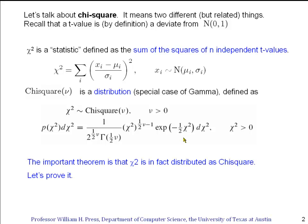The reason we use the name chi-squared for both of these concepts is because they are related. The theorem is that χ², the statistic, is in fact distributed as chi-square, the probability distribution. So let's prove that theorem.